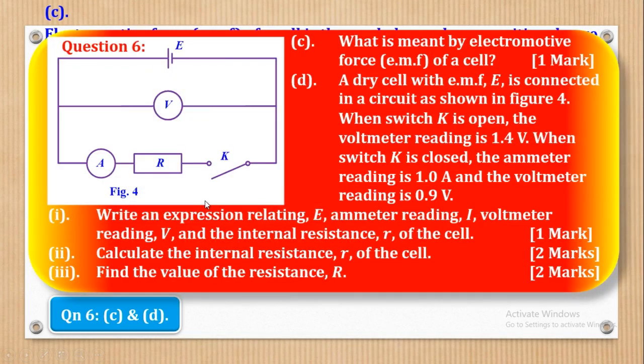Okay, so now we shall go to part D. Part D says, a dry cell with EMF E is connected in a circuit as shown in figure 4. So this is figure 4. This is the dry cell with EMF. When switch K is open, the voltmeter reading is 1.4 volts. So when this switch is open, the voltmeter reading is 1.4 volts. When switch K is closed, the ammeter reading is 1.0 ampere and the voltmeter reading is 0.9. Then Roman 1: write an expression relating E, ammeter reading I, and voltmeter reading V, and the internal resistance R of the cell.